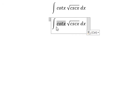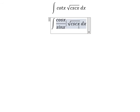For cotangent x, we change to cosine x over sine x. For cosecant of x, we change to one over sine x.